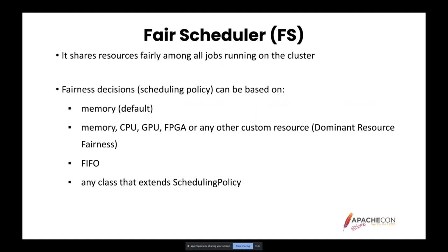FAIR and any other custom fairness scheduling policy class can be created to make these fairness decisions. The basic idea is that when there is a single app, it gets to use the entire cluster, and when new apps are submitted, they get the resources that free up. In time, every app should get about the same amount of resources, allowing quick and smaller tasks to finish in reasonable time without starving long-lived tasks.